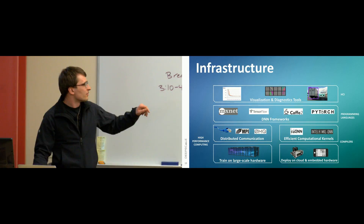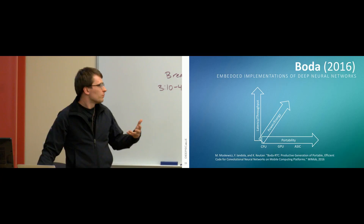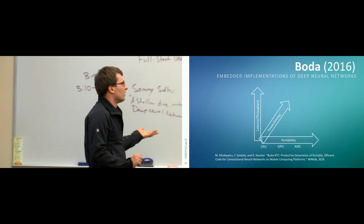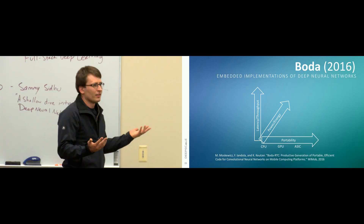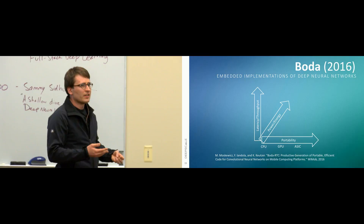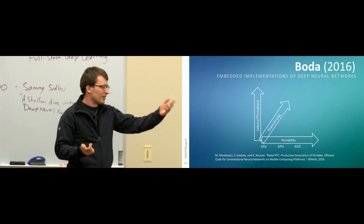We also build efficient computational kernels ourselves. We published a paper called Voda, which is an open-source kernel compiler for generating very efficient computations of neural nets on processors like those in your phone. That was version one. Sammy is highly involved in version two, which we call DeepScale Virtual Machine, or DSVM.